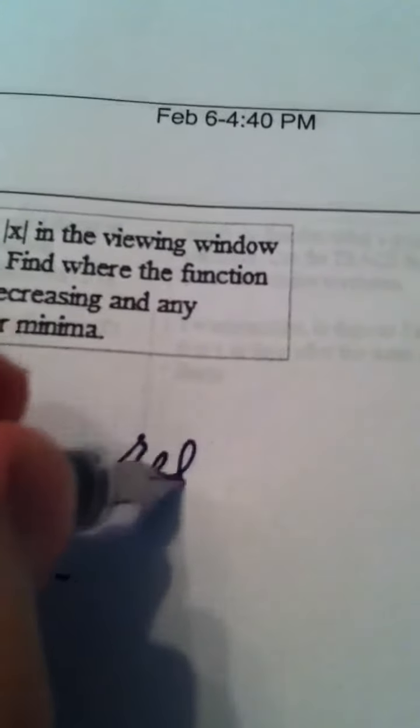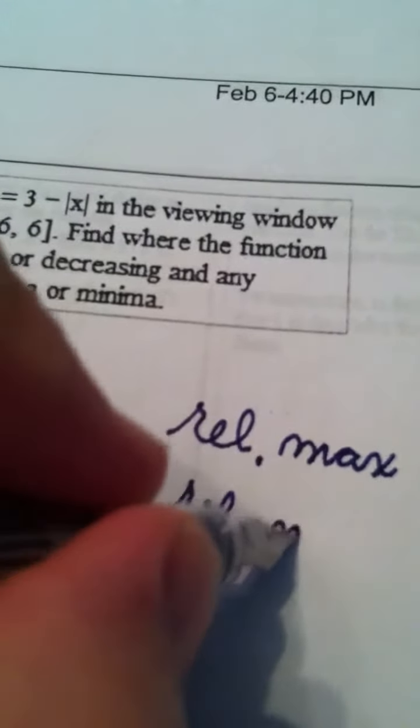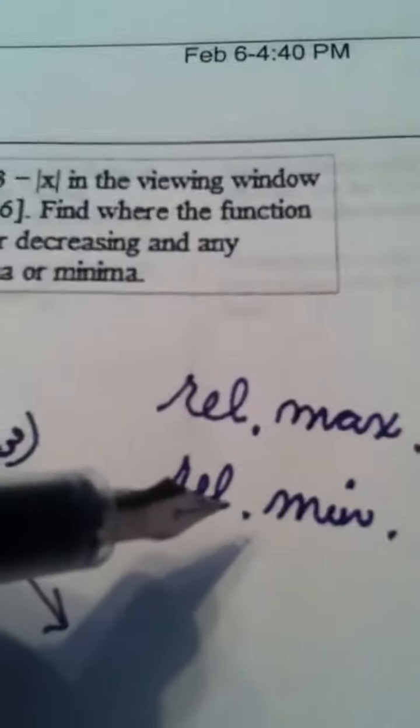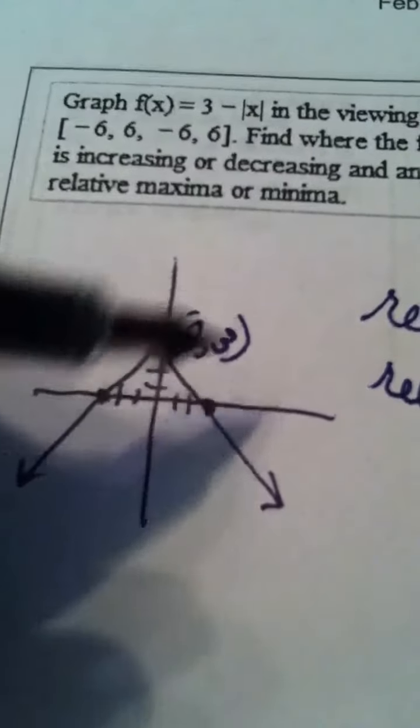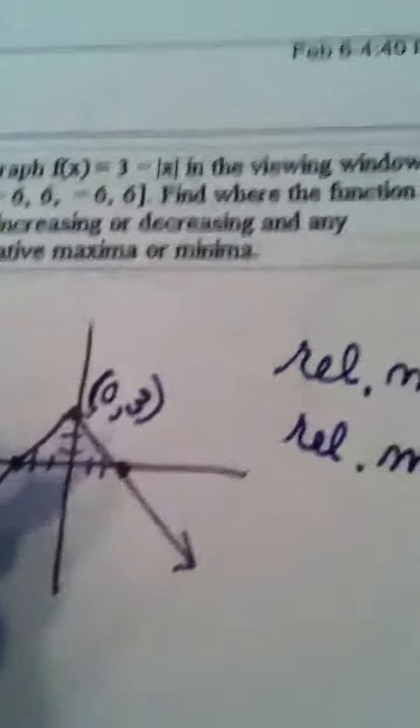Now, if I'm looking for relative maximum, I'm looking for relative minimum. Let's see, relative minimum, no, because I have no valleys. There's no valleys at all in this curve, so nothing meets that definition, so none.